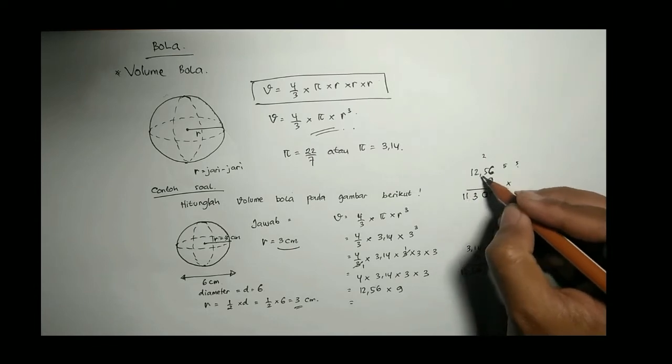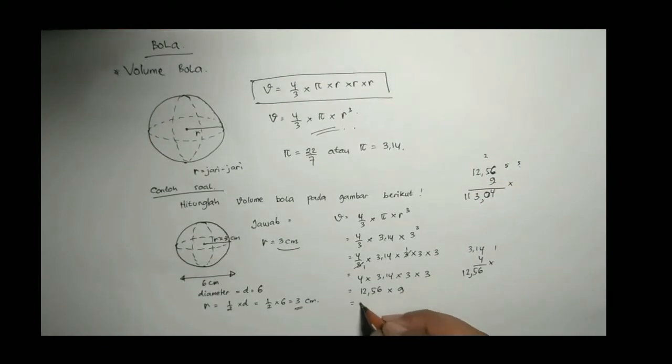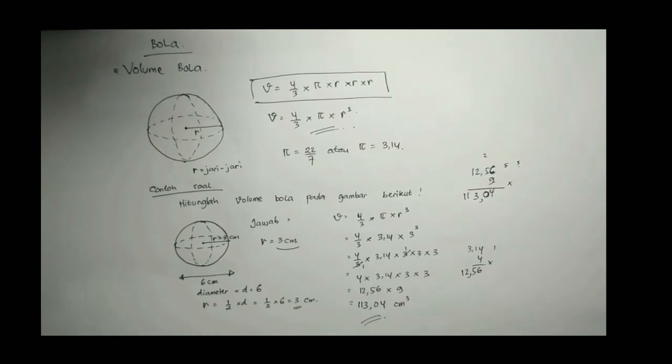9 kali 2, 9 kali 2 tambah 5, 23. Tulis 3 satuan, nyimpan 2. 9 kali 1, 9 tambah 2, 11. Karena ada 2 koma berarti 2 koma juga hasilnya, 113,04. Ini adalah volume dari bangun ruang bola yang dimaksud ya.